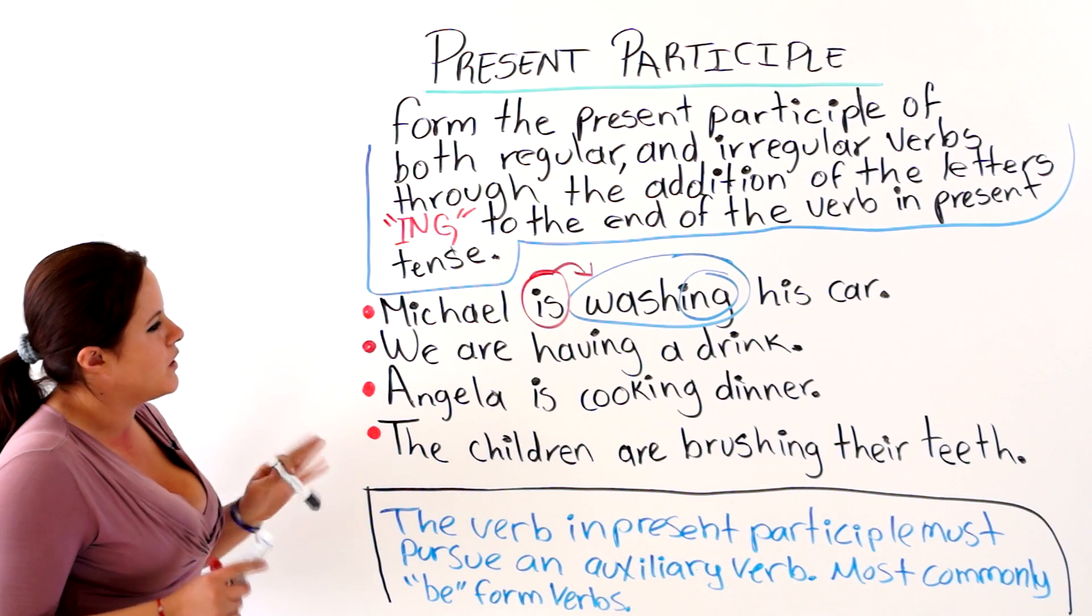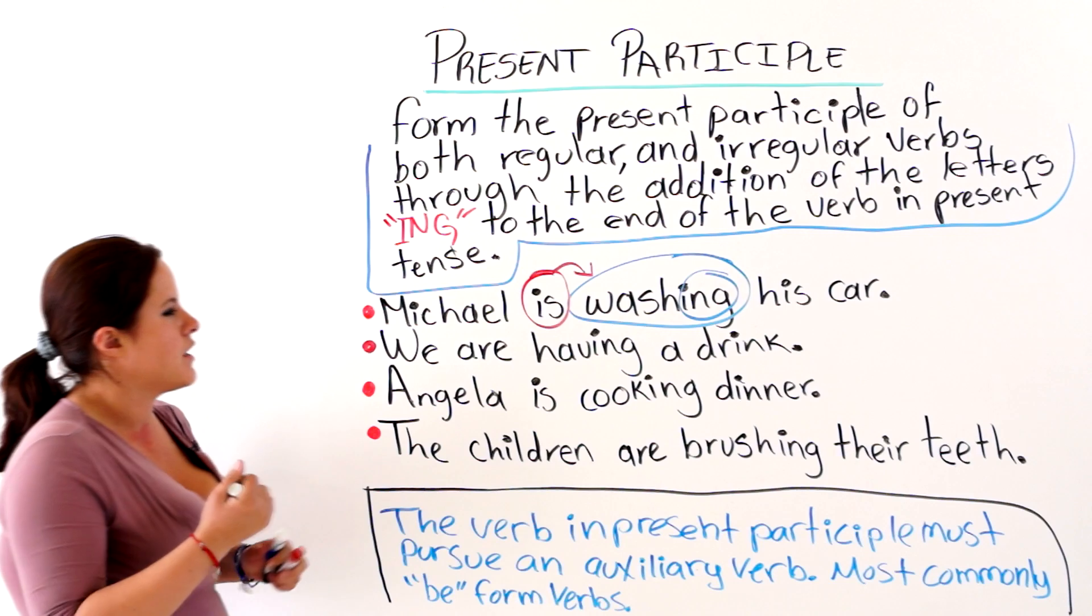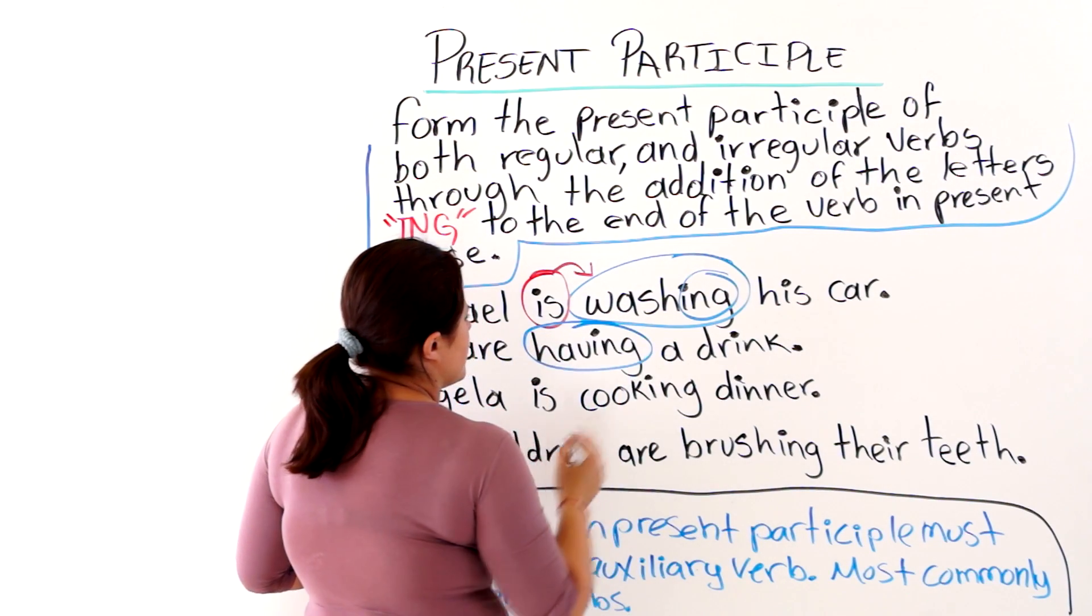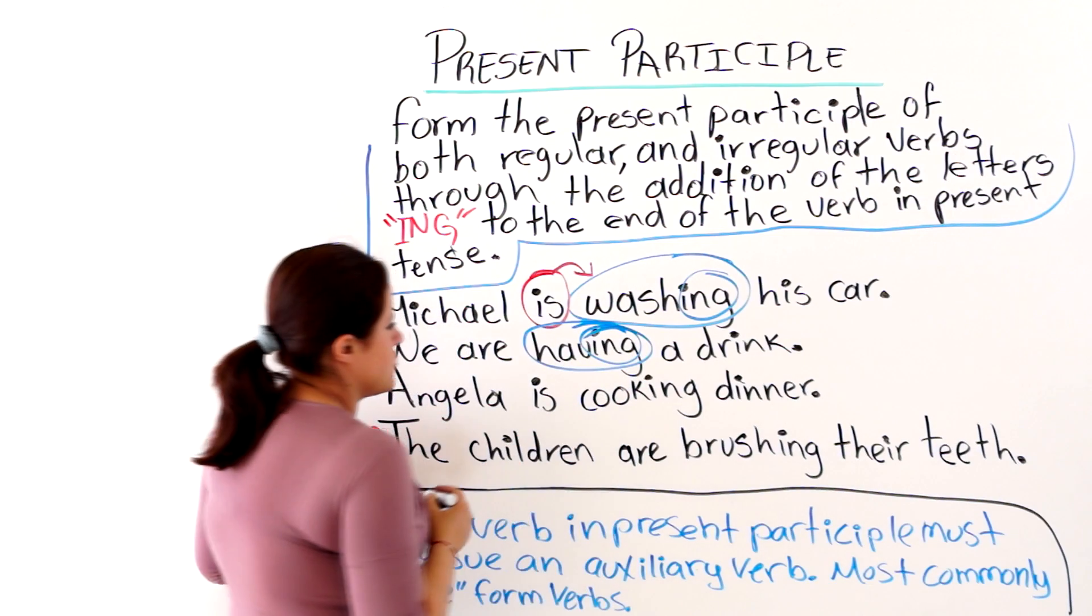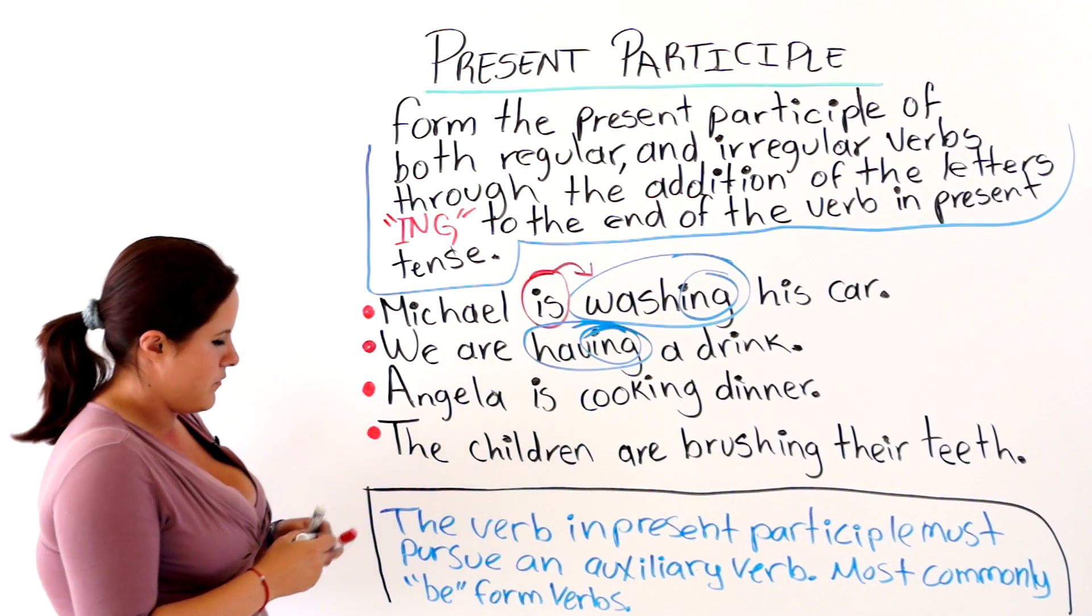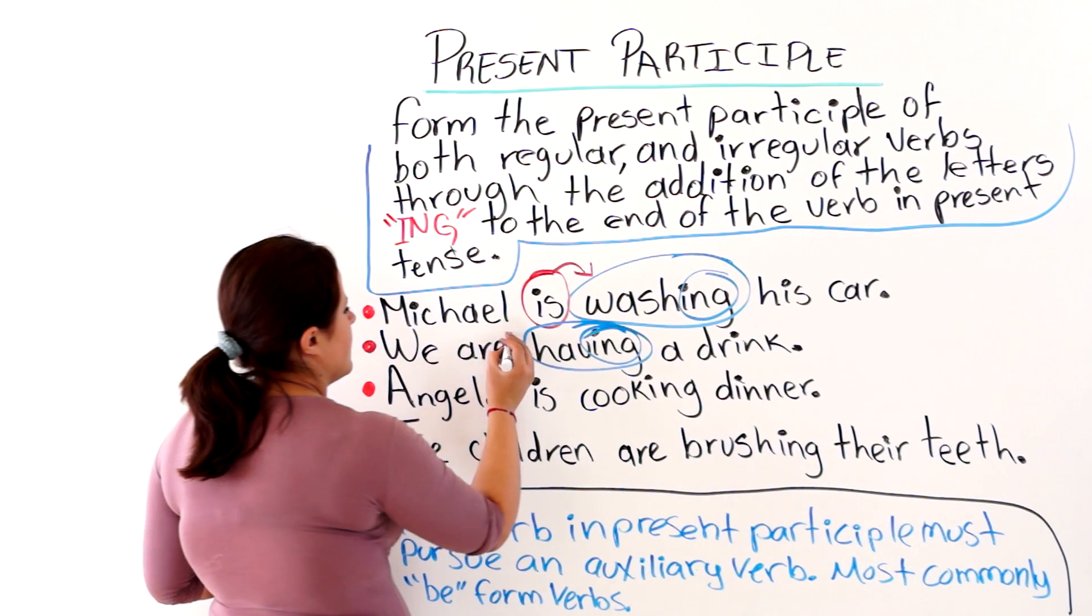The next one says, We are having a drink. Having is the present participle verb. As you can see, we added the ing to the verb have. And before this verb here, we have...